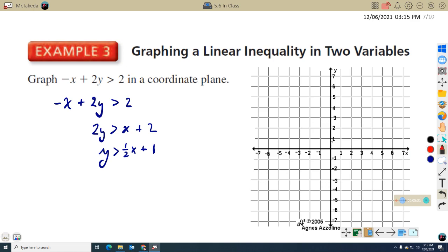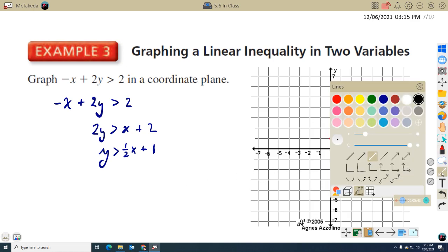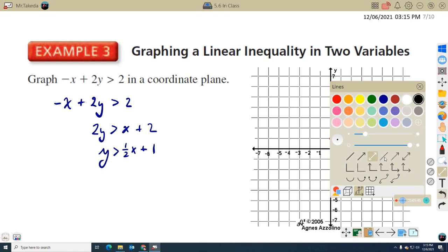So where's my y-intercept at 1? My slope is positive 1 half, so positive 1 up, positive 2 to the right.